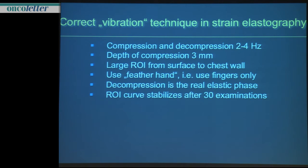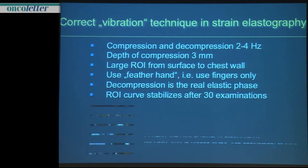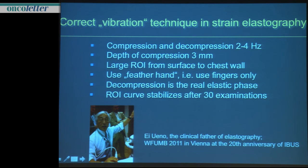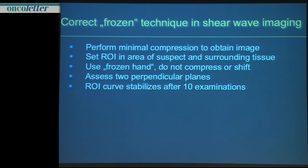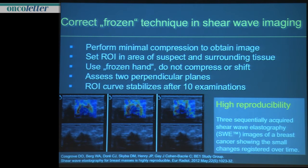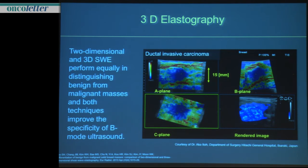There are substantial differences between strain and shear wave imaging techniques. In strain elastography, the vibration technique requires you to move gently with your fingers — only a movement of up to three millimeters, not pumping. Our colleague Ueno speaks of the 'feather hand,' using the fingers only. He is a great master of elastography in clinical applications. This is completely different from the frozen technique used in shear wave imaging, where you hold the transducer very stable, allowing high reproducibility. All these techniques can be expressed as 3D elastography.